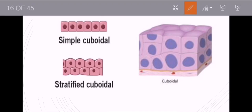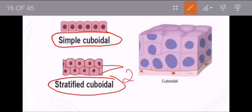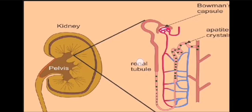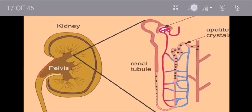This particular structure is simple cuboidal epithelium, and this is stratified cuboidal epithelium. Like squamous and columnar epithelium, we use the word 'stratified' when there is more than one layer. When you have two or more layers, you say 'stratified.' When there is one layer, you say 'simple cuboidal.' These are some of the examples where cuboidal epithelium is present.